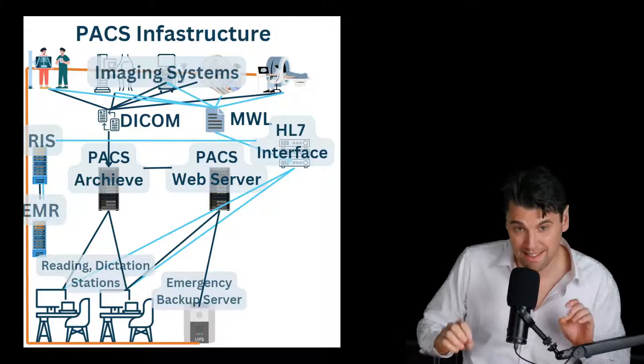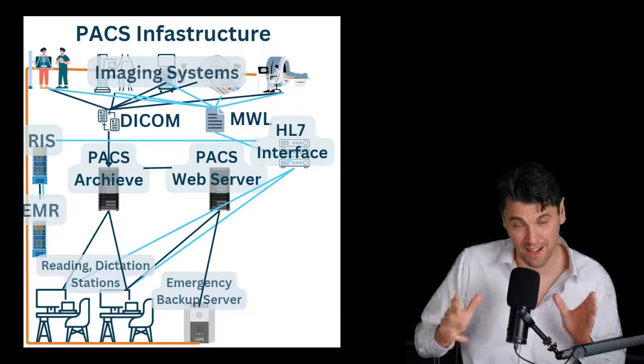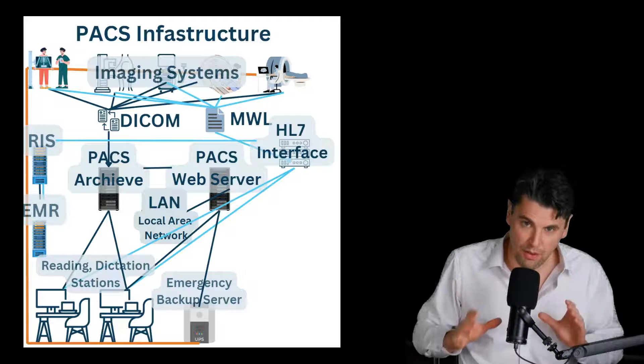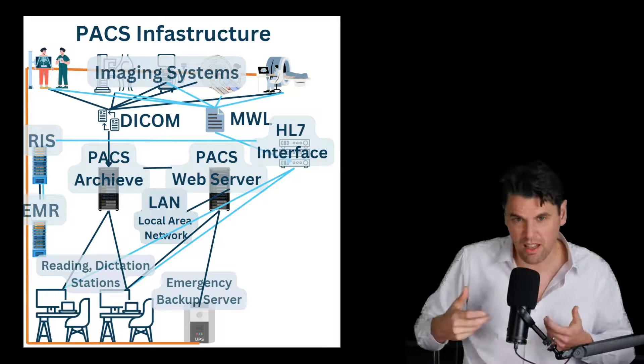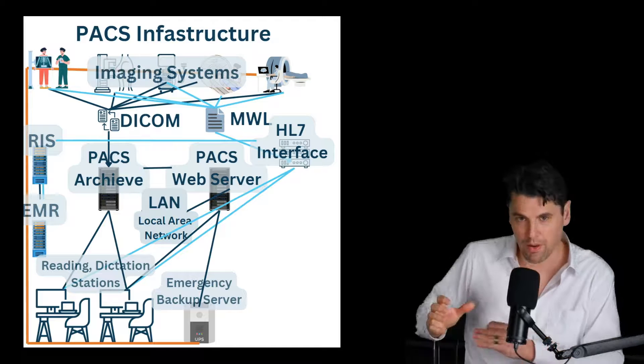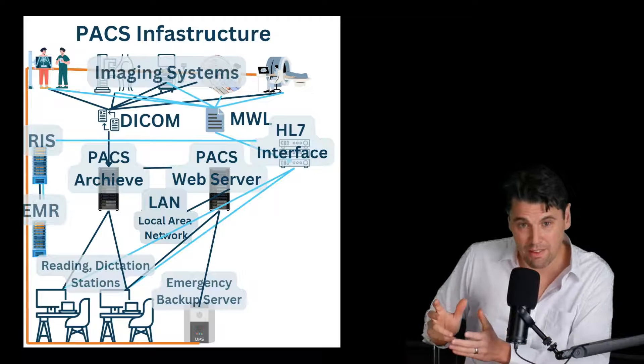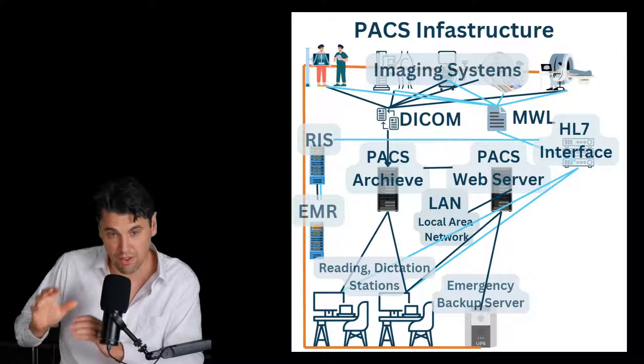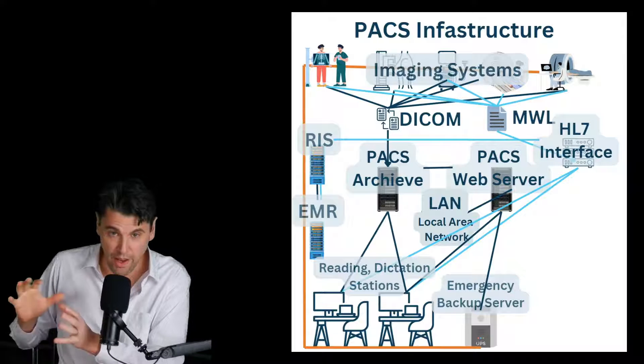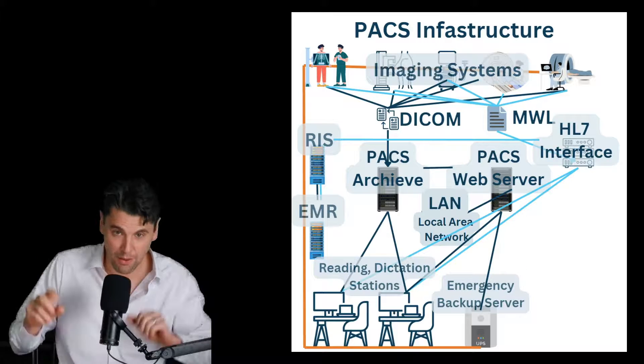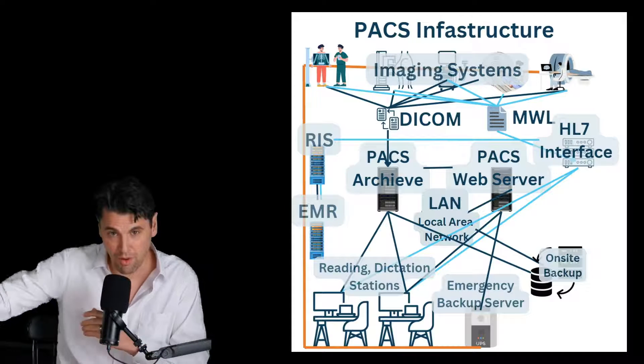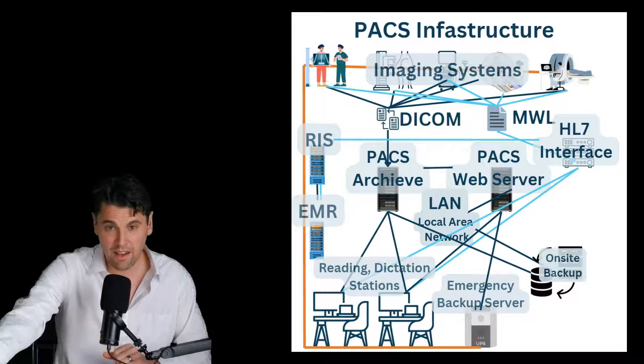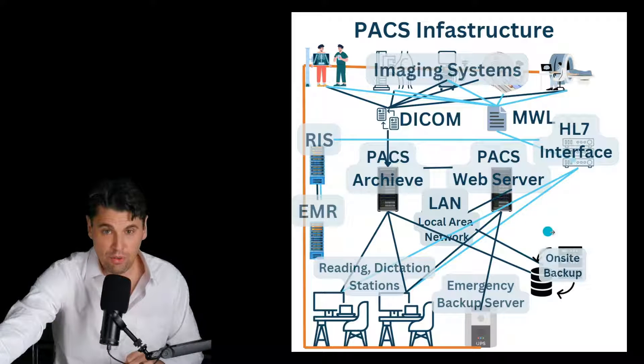The RIS system can also be connected to the EMR for the electronic medical record. And everything we've been talking about so far has all been within the hospital or the network of hospitals. Sometimes you could call that a franchise. There's also communication, which is going to happen on the local area network or the hospital's internet. The images will go from that PACS web server to the local area network and then can also be connected to on-site backup.